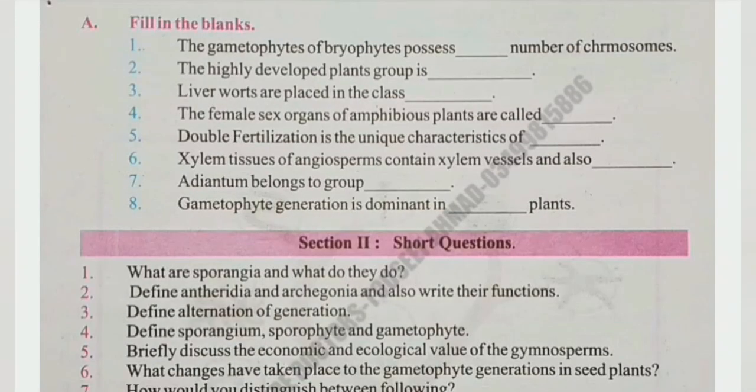Now fill in the blanks. Number 1: The gametophytes of bryophytes possess haploid number of chromosomes. Number 2: The highly developed plant group is angiosperm. Number 3: Liverworts are placed in the class Hepaticae. Number 4: The female sex organs of amphibious plants are called archegonium.